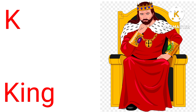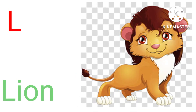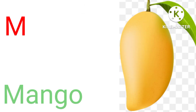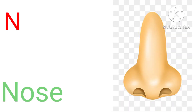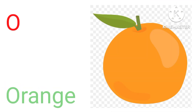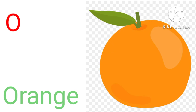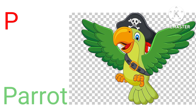K for king, king means raja. L for lion, lion means sir. M for mango, mango means arm. N for nose, nose means nut. O for orange, orange means narangi.